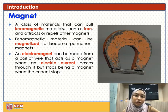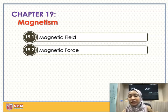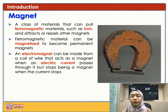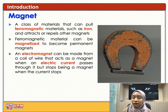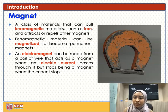Good morning everyone, Dr. Nat here. We are doing Chapter 19 on magnetism, and for today's class specifically we are doing magnetic field, which is Section 19.1. So magnets — you know what a magnet is in general — it's something that attracts metals. It's a class of material that can pull ferromagnetic materials. The metals that it attracts are called ferromagnetic materials, such as iron. It attracts or repels other magnets.